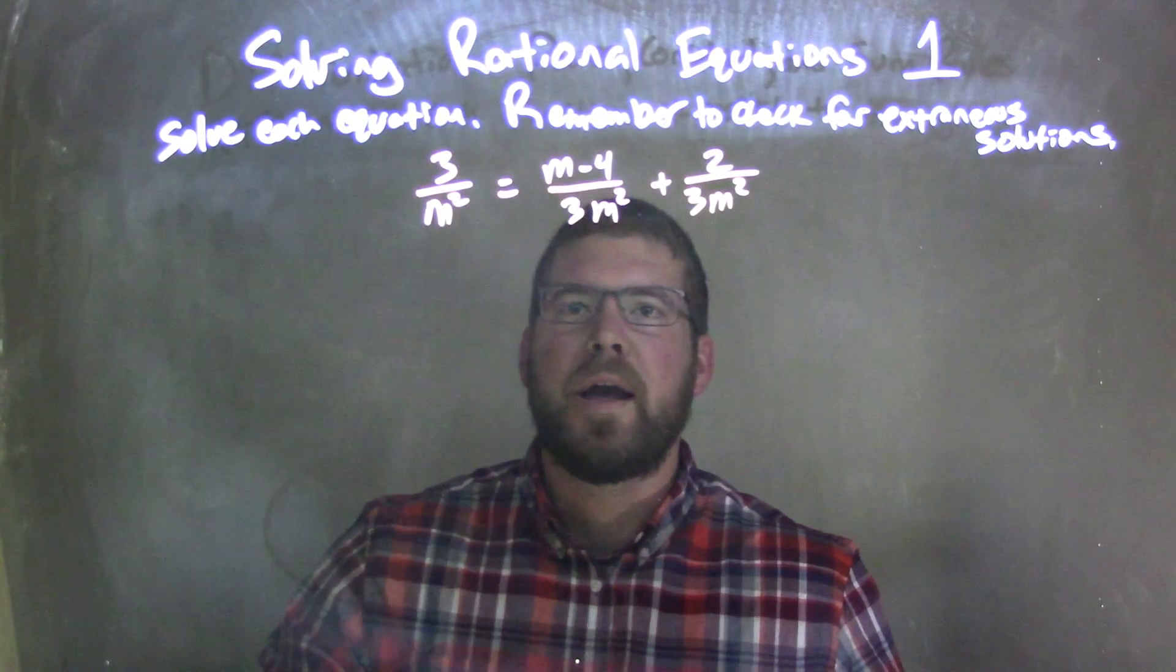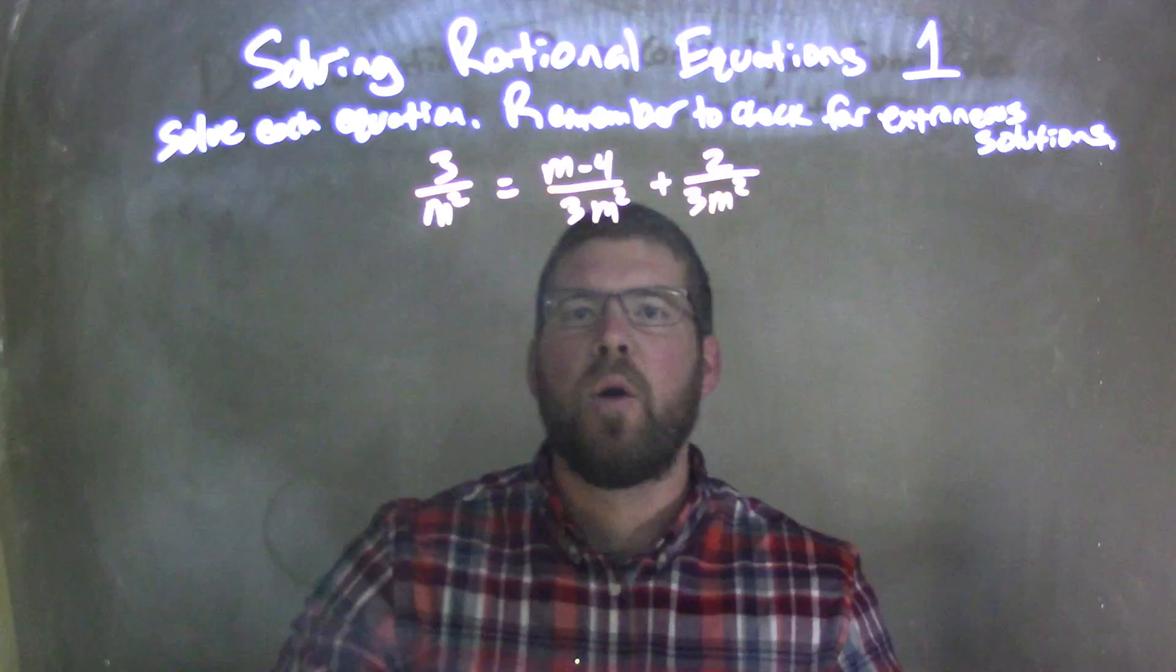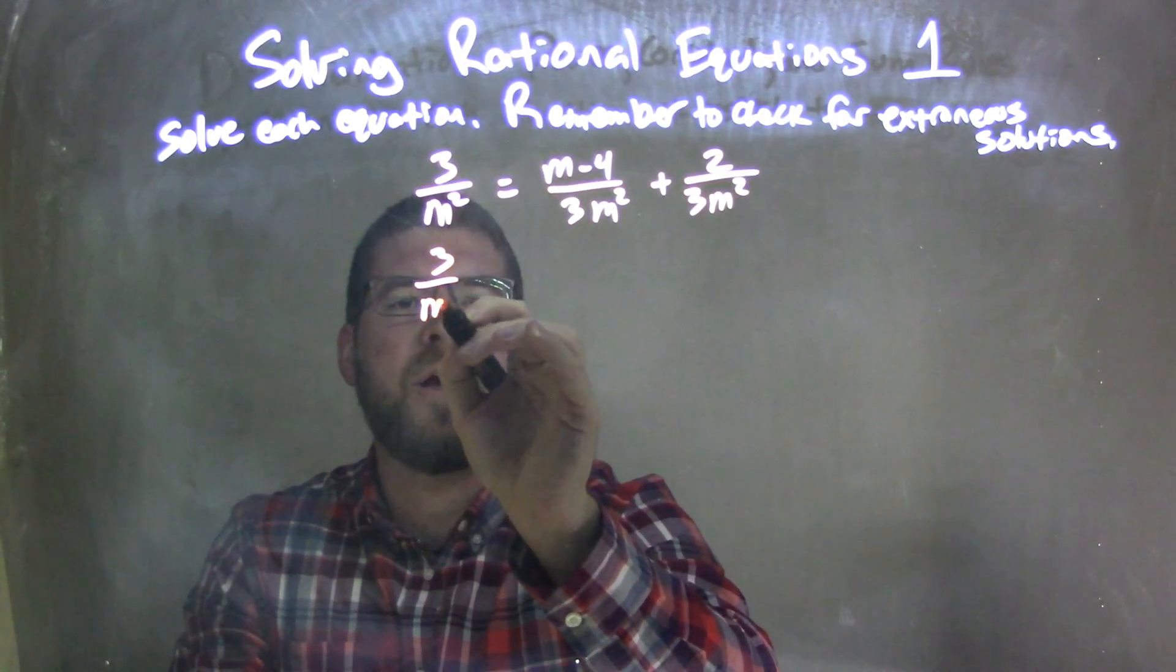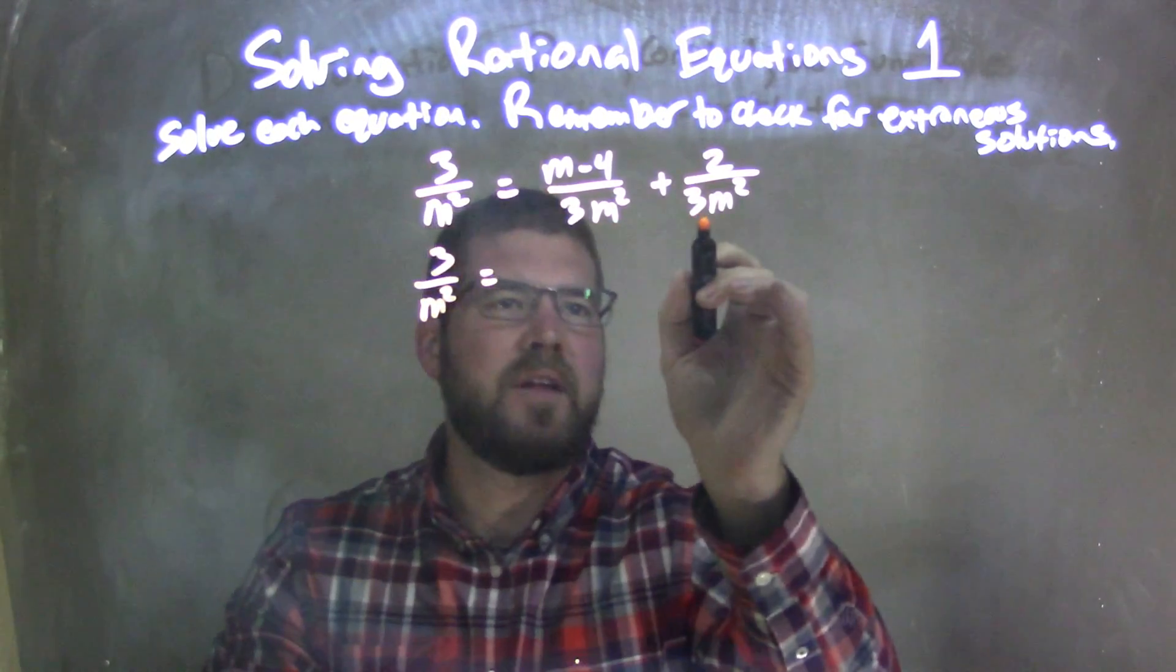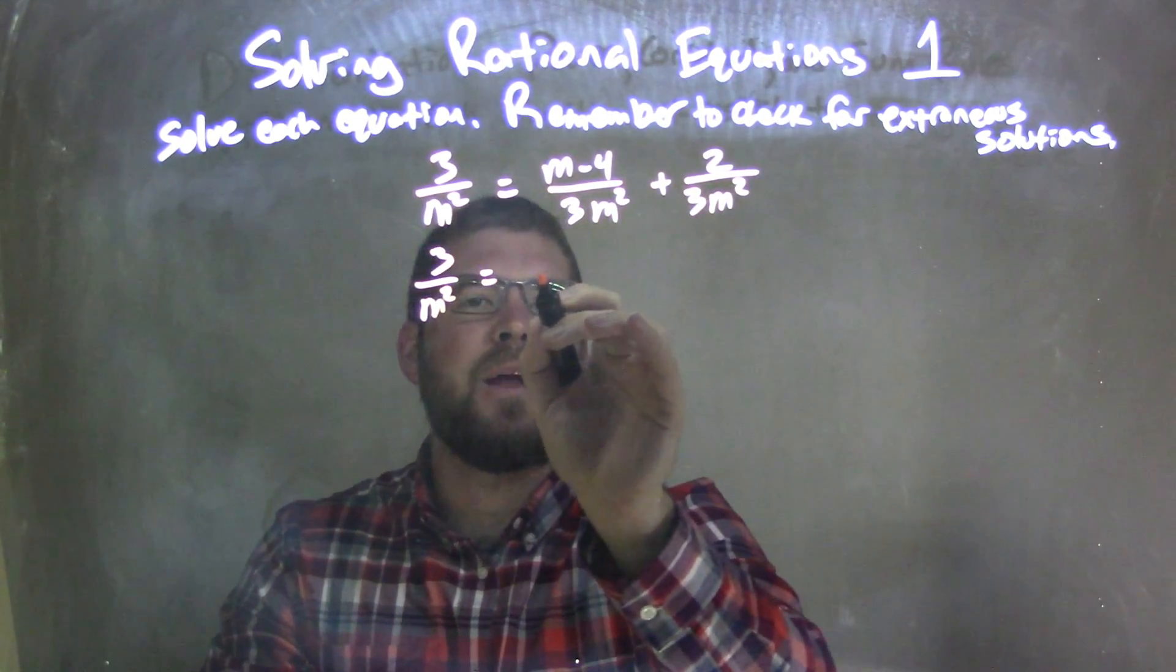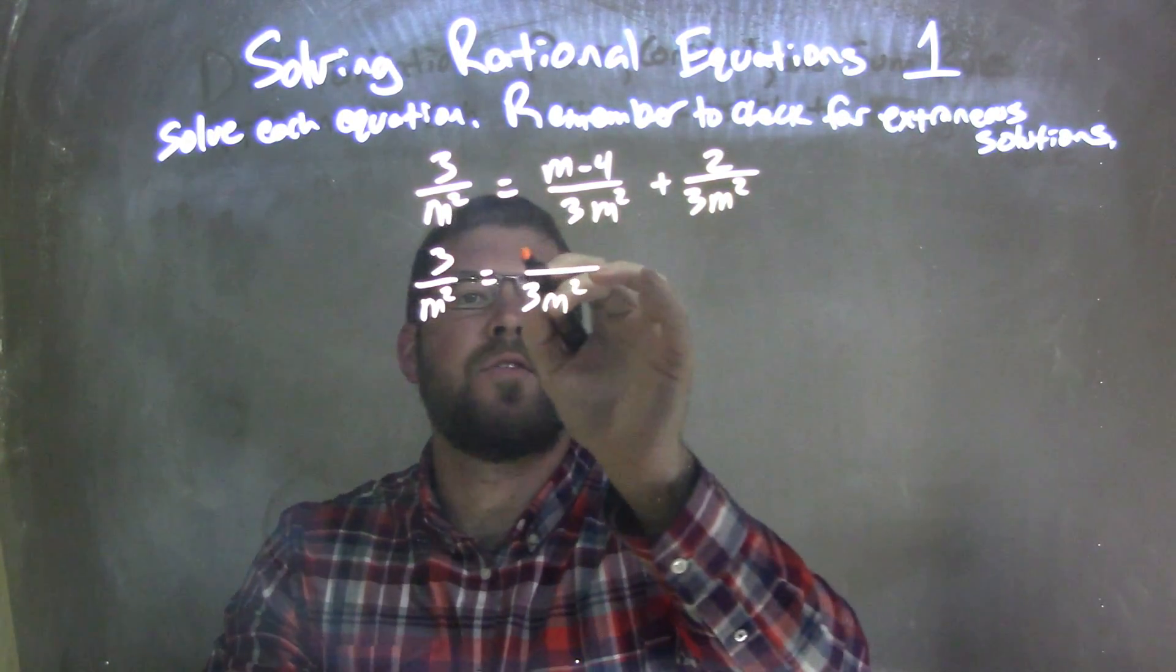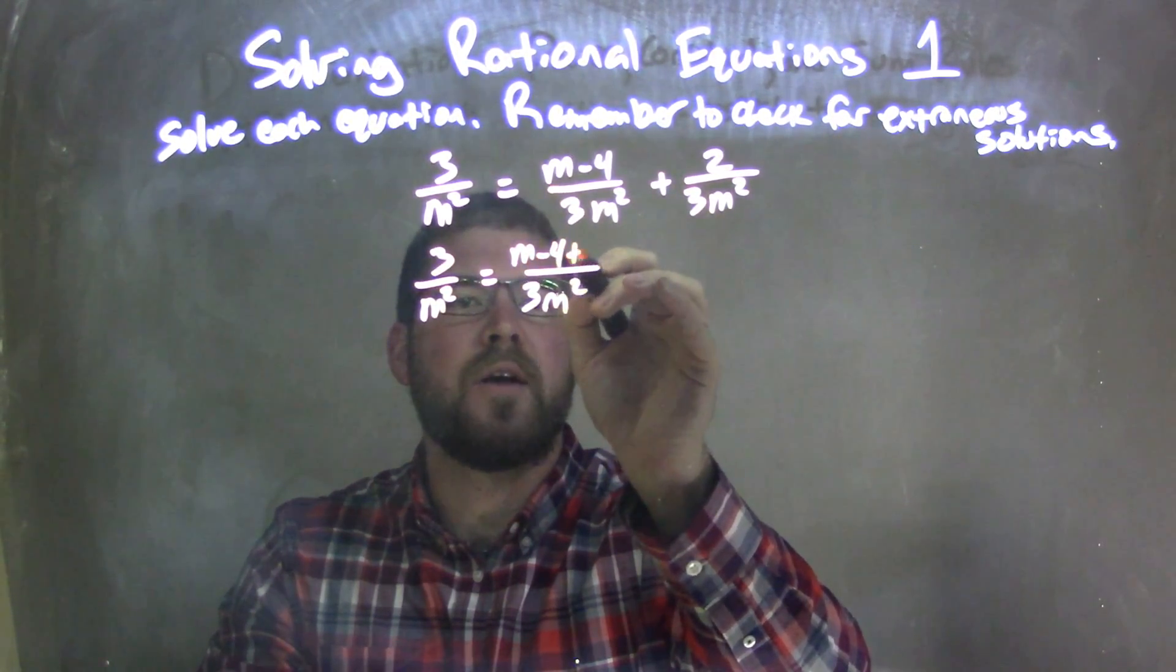First thing I'm looking at here, I see a lot of fractions, and what I want to do is see if I can combine these two fractions. So I'm going to combine them here. 3 over m squared equals, since they have the same base, I can add them together keeping that same base, 3m squared, and the numerator is m minus 4 plus 2.